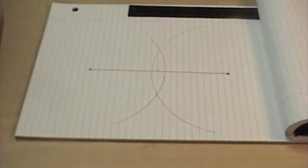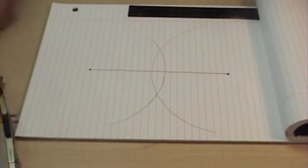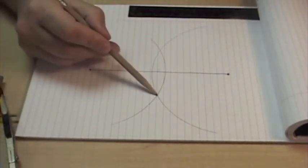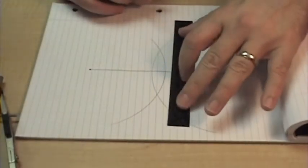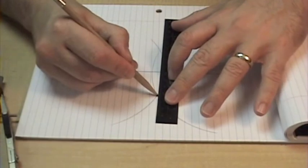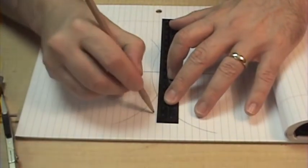Now we see we have two arcs on a sheet of paper that overlap at this point and at this point. And so now if I take a straight edge and I come from this point to that point and draw a line through them.